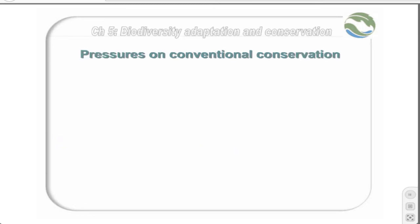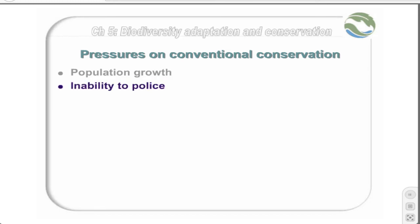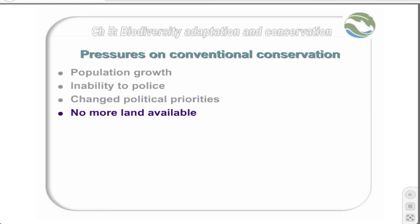A number of pressures have caused changes in the old conservation paradigm. Firstly, population growth means there aren't large unpopulated areas left in Africa. Instead, there is a growing population adjacent to conservation areas, and these people in many instances have poor livelihoods and are desperate for land. Equally, there is an inability of police to manage the conservation areas, largely due to changes in budgets and increased population pressure. There is also a change of political priorities — social issues are seen as far more important than in the past. Land is no longer available for expansion of conservation areas, and there is a general cut in expenditure on conservation in favour of more social development.